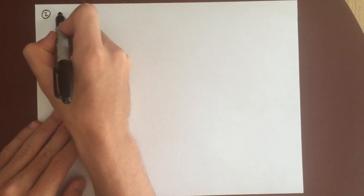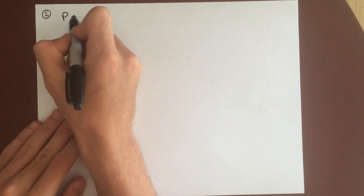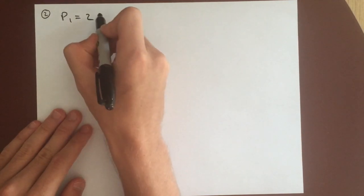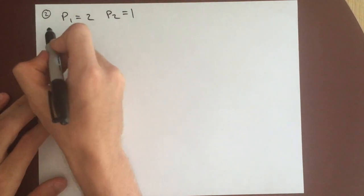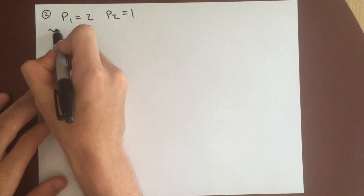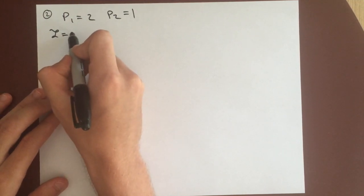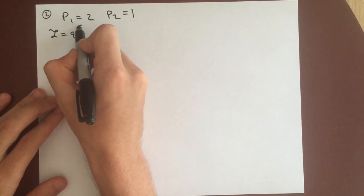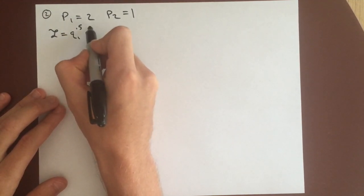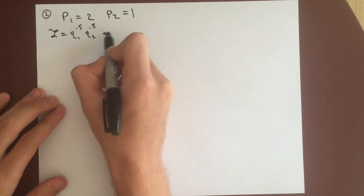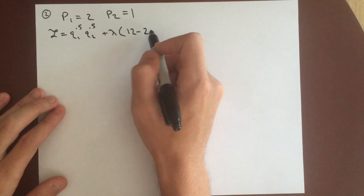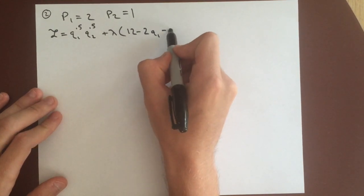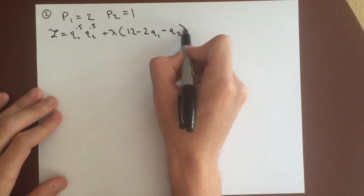So for this second point, we're going to have p1 equal to 2, and we're going to have p2 stay the same and be equal to 1. And this will change our Lagrangian slightly, and we'll still have this q1 to the 0.5, q2 to the 0.5. But now we'll have lambda 12 minus 2 is now the price of good 1, times q1, and still minus q2.